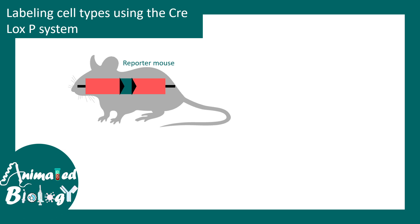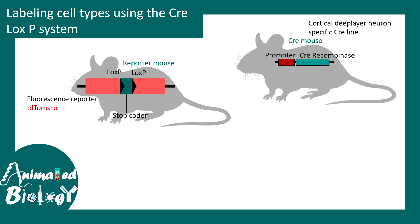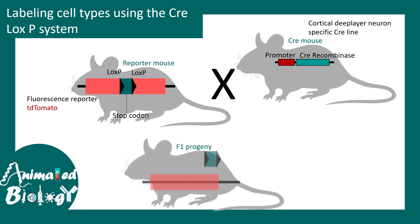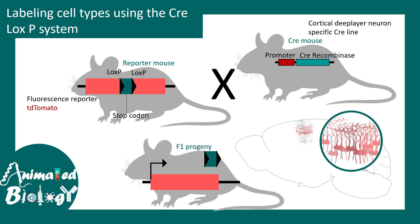The Cre-LoxP system can also be used for lineage tracing — labeling specific cell types or categories of cells. For example, a reporter gene such as TdTomato or GFP is placed with a stop cassette flanked by LoxP sites. Normally there is no reporter expression because of the stop cassette. But when crossed with a tissue-specific promoter containing Cre, Cre-mediated recombination floxes out the stop cassette, allowing transcription and translation of the reporter gene. This labels specific cells — for example, a specific subtype of neuron in a mouse brain — and requires only an organ- or tissue-specific Cre.